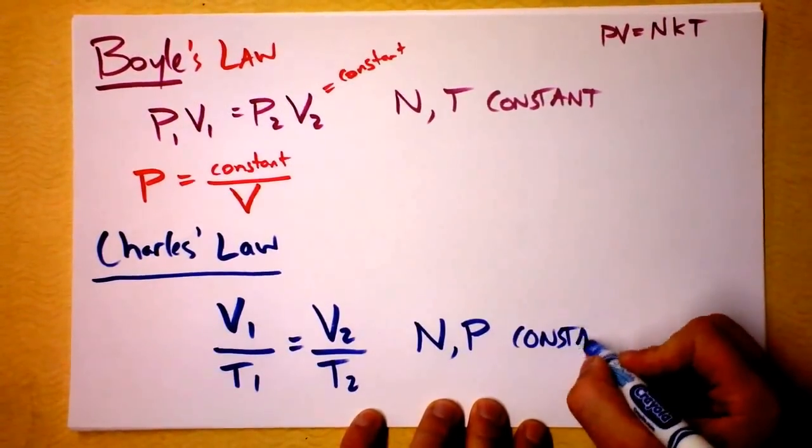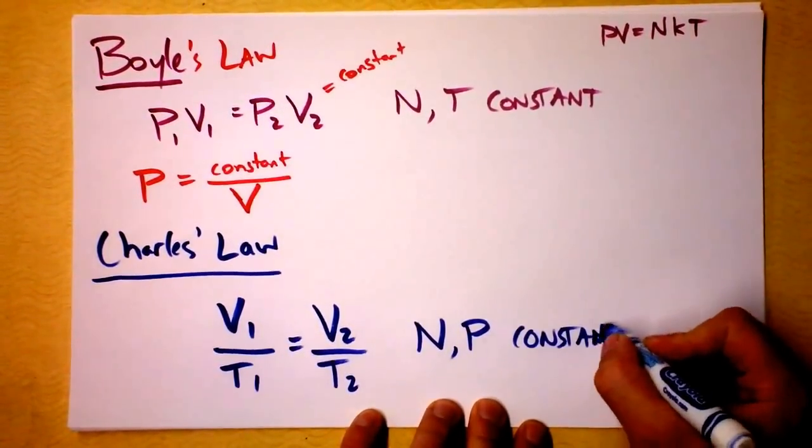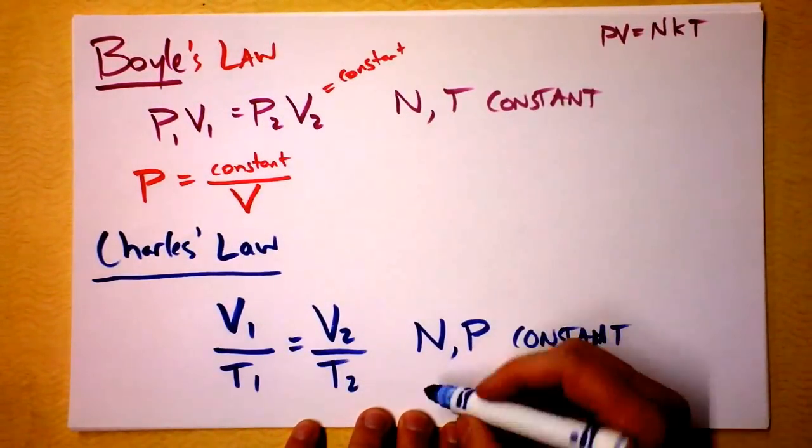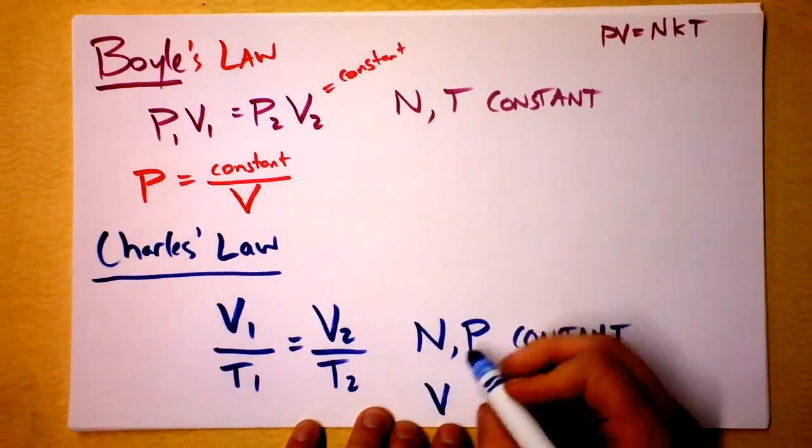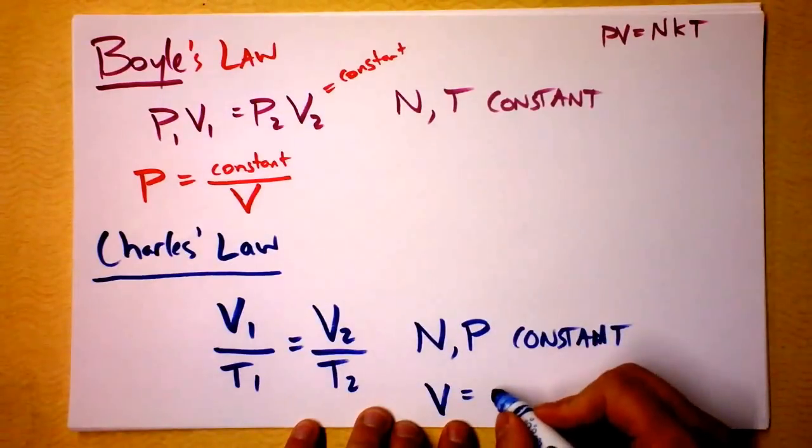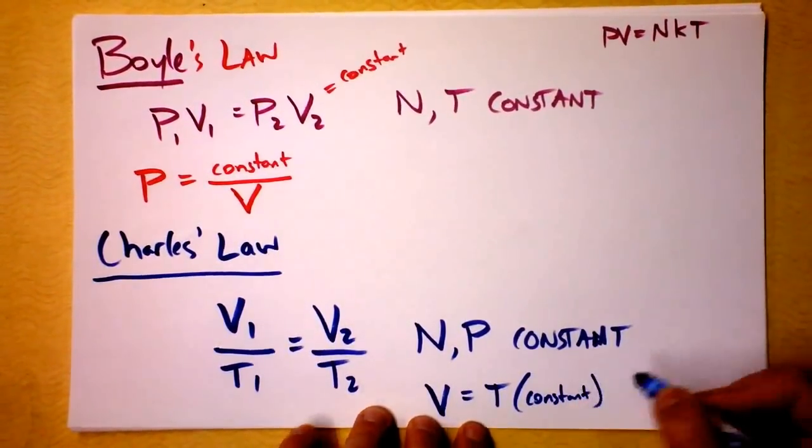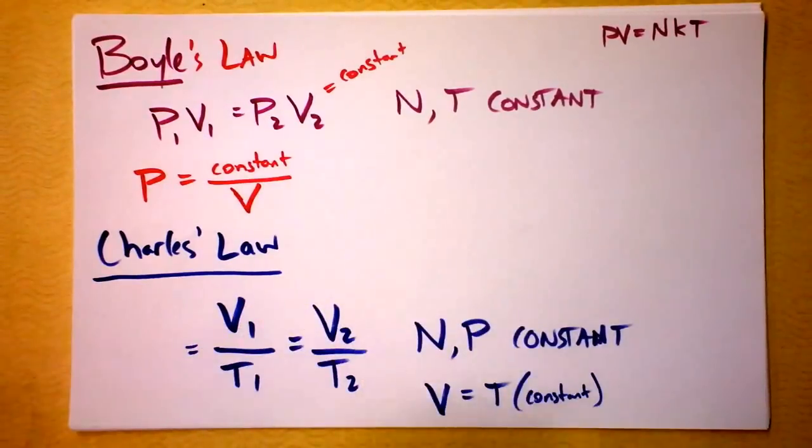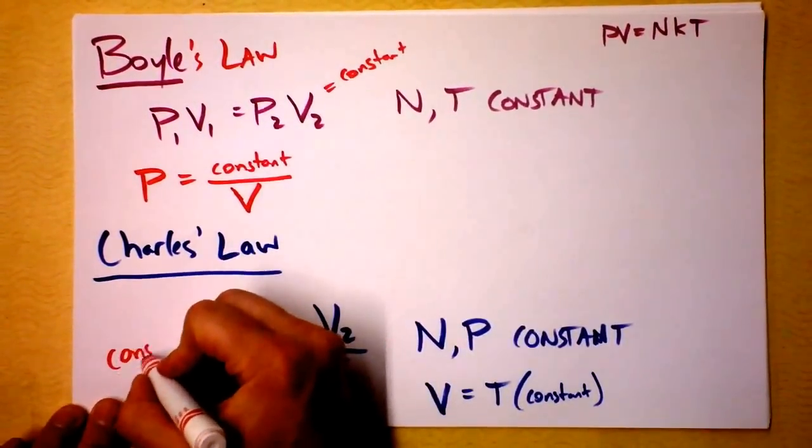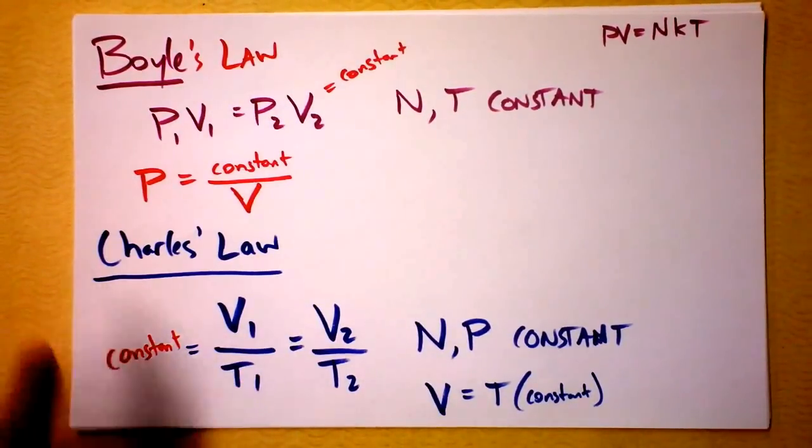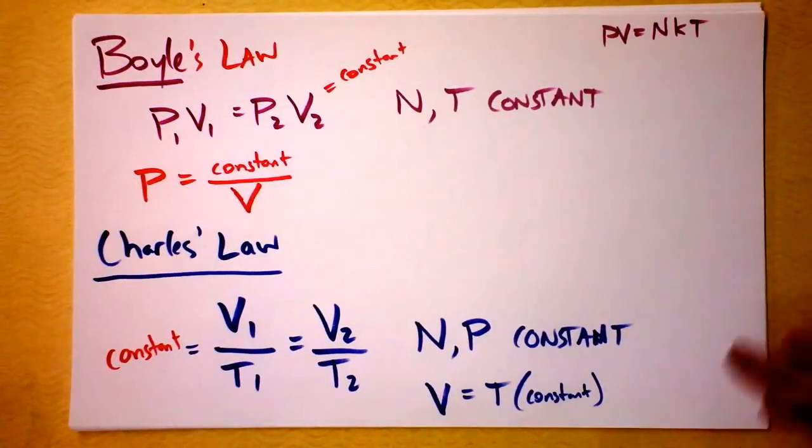And he said that was true. And then that leads to the conclusion that volume equals temperature times some constant. Because if we say this is equal to some constant, let's go right again, that was fun. This is equal to some constant. Then you can solve it for volume and say volume is the constant times temperature.